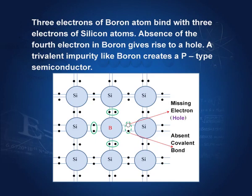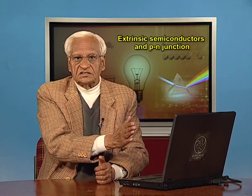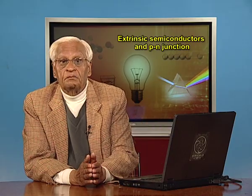The semiconductor formed by adding a trivalent impurity like boron is called a p-type semiconductor. The acceptor energy levels are close to the valence band. At absolute zero, the holes remain unfilled. But the electrons from the valence band, because there is very little gap, can jump, and when they jump they leave holes in the valence band. So the conduction is by holes. We have seen holes move like positive charges — that is why this semiconductor is called p-type.